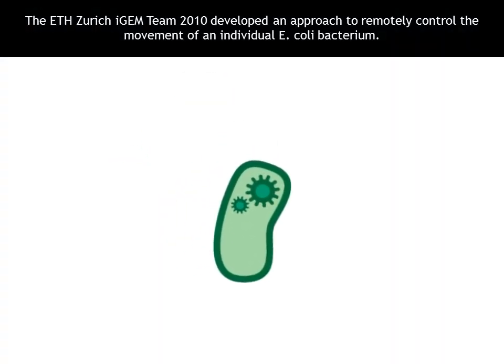The ETH Zurich iChain team 2010 developed an approach to remotely control the movement of an individual E. coli bacterium.